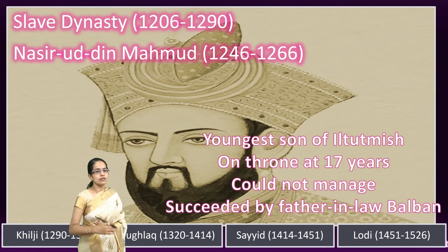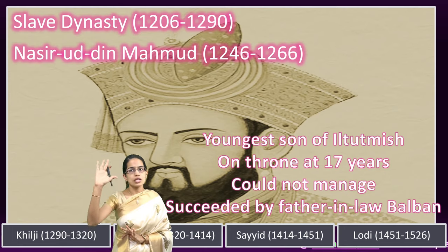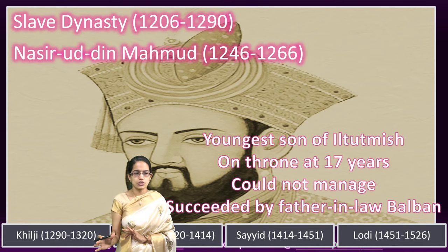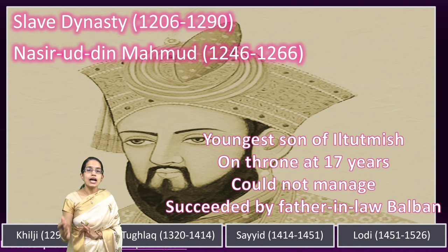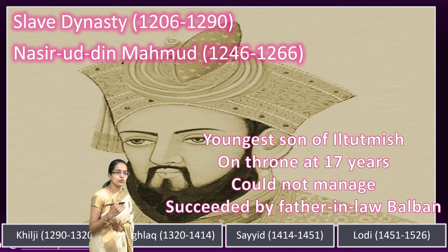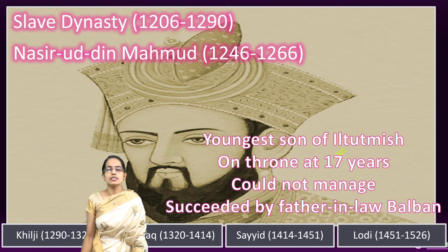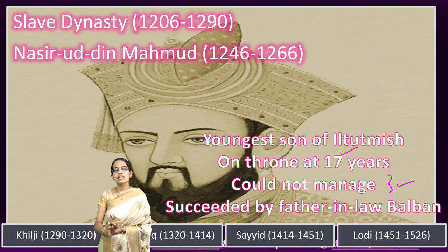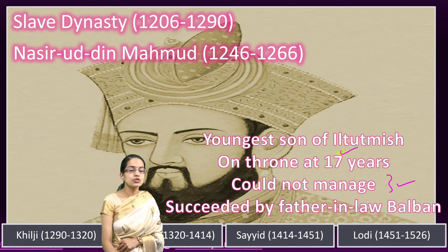After Razia Sultan, after a period of four to five years of turmoil, the youngest son of Iltutmish, Nasiruddin Muhammad, rose to power at a very young age of only 17 years. However, since he was very young, he could not manage the affairs well, and was therefore succeeded by his father-in-law, Ghiyasuddin Balban.